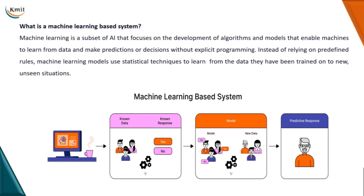The alternative for overcoming the disadvantages of rule-based systems is machine learning based systems. Machine learning systems stand in stark contrast — they are dynamic, agile, and adaptable because the AI learns patterns from large data sets over time by observing knowledge in each data point. Machine learning is basically a subset of AI that focuses on developing algorithms and models that enable machines to learn from data and make predictions or decisions without being explicitly programmed.